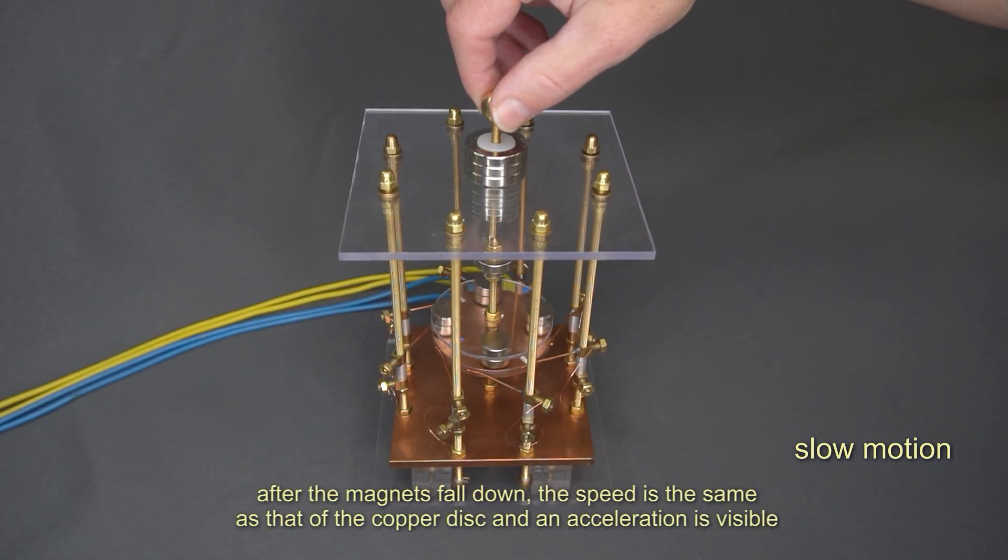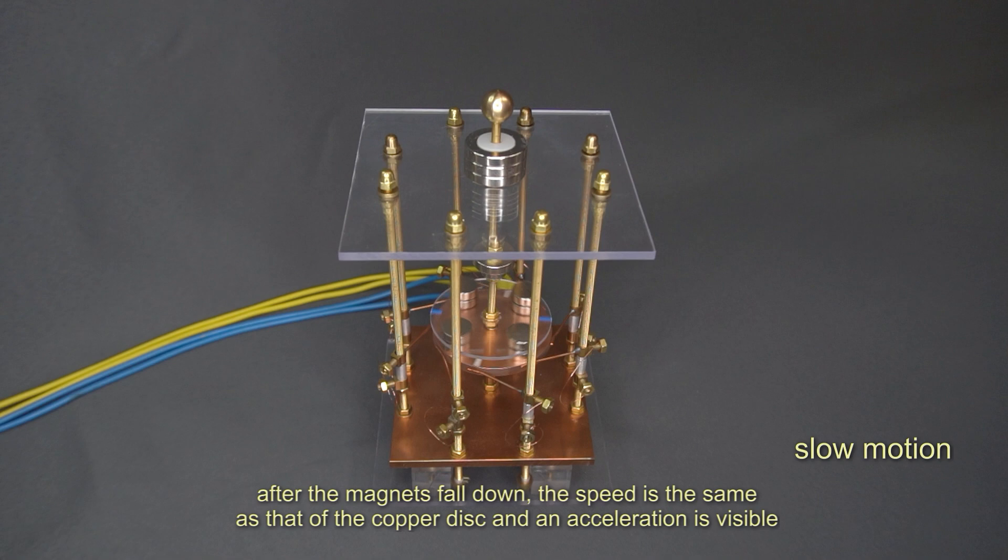After the magnets fall down, the speed is the same as that of the copper disc and an acceleration is visible.